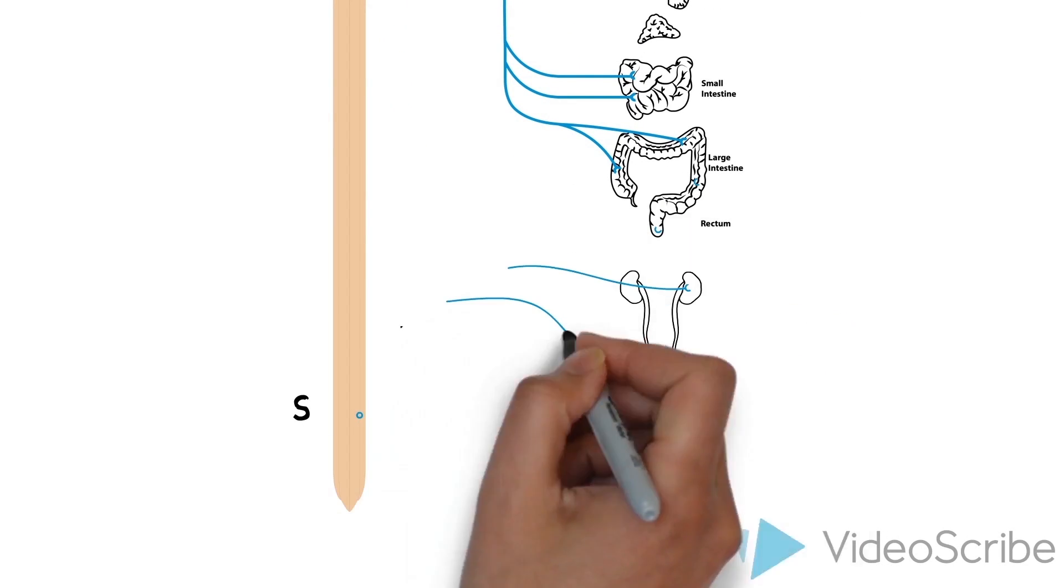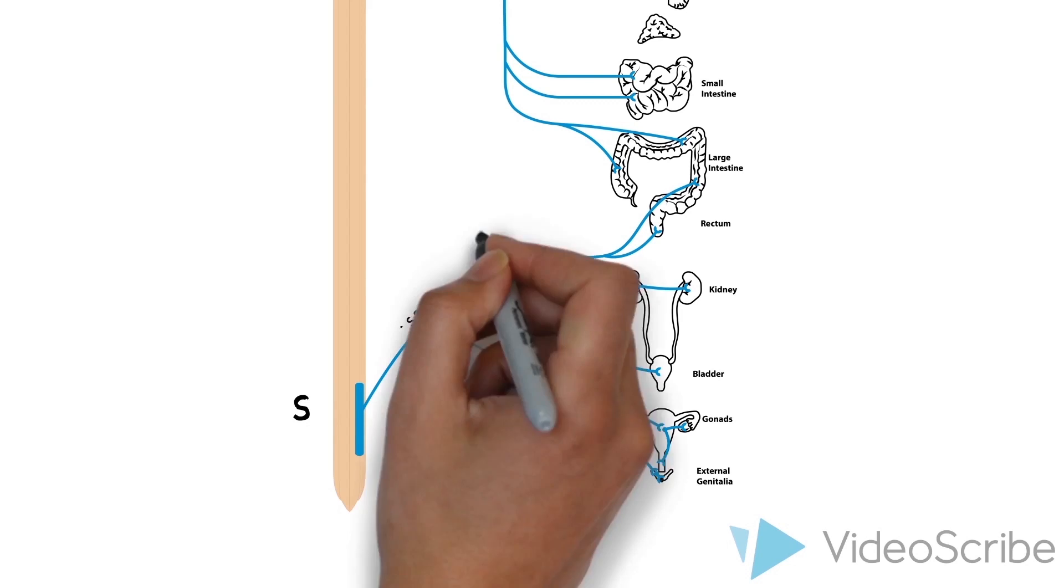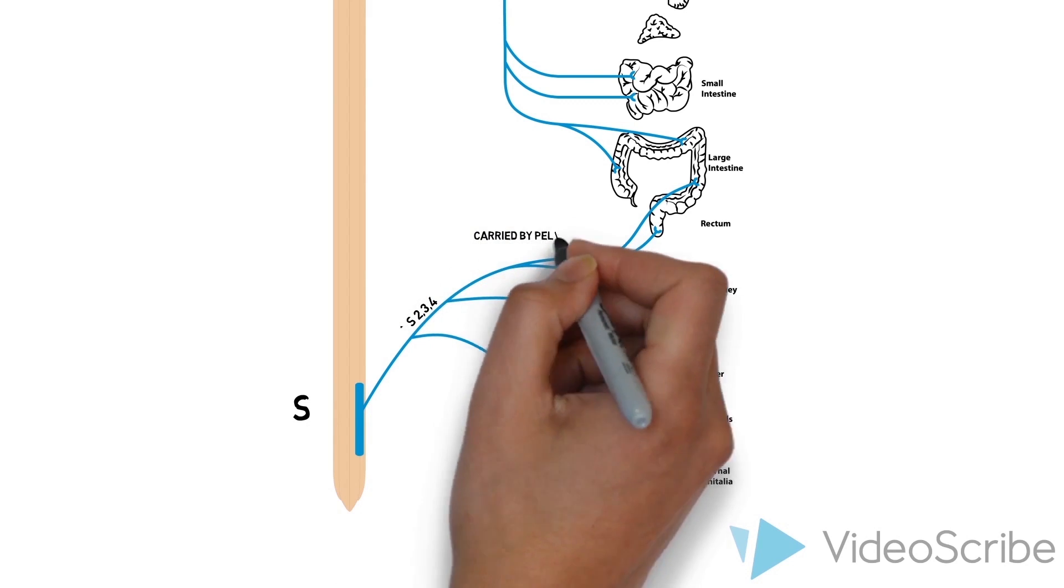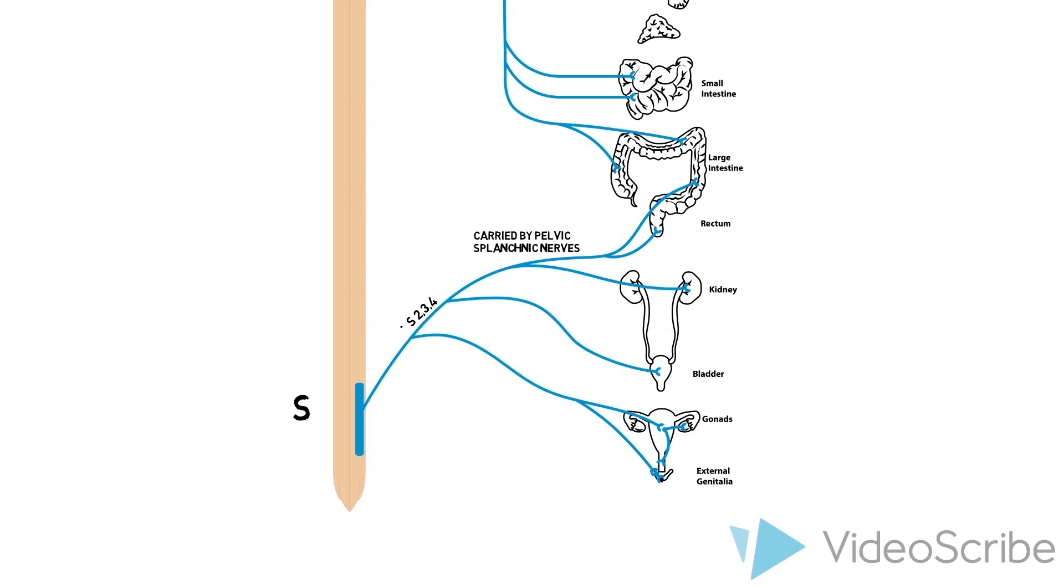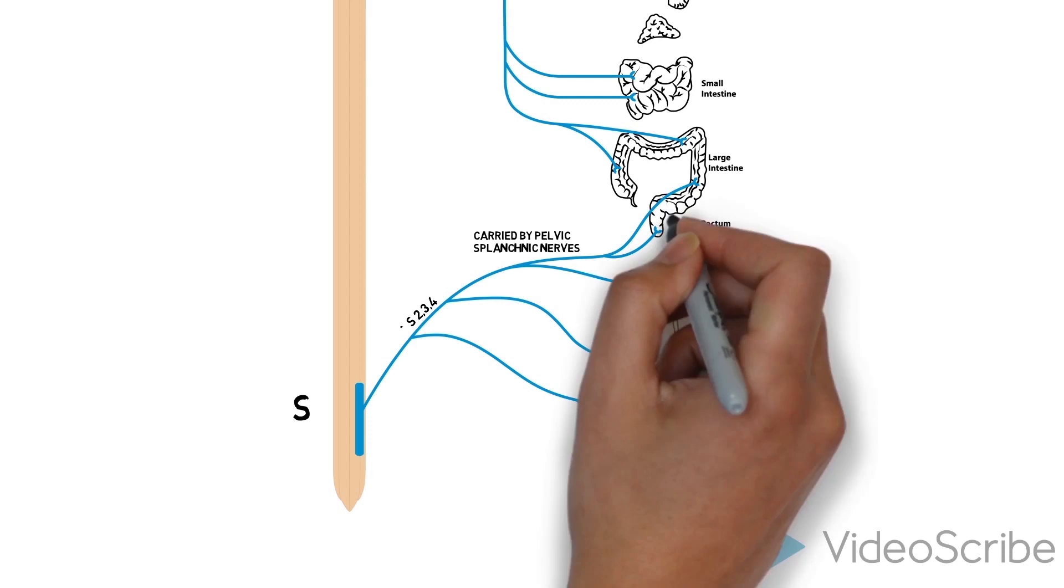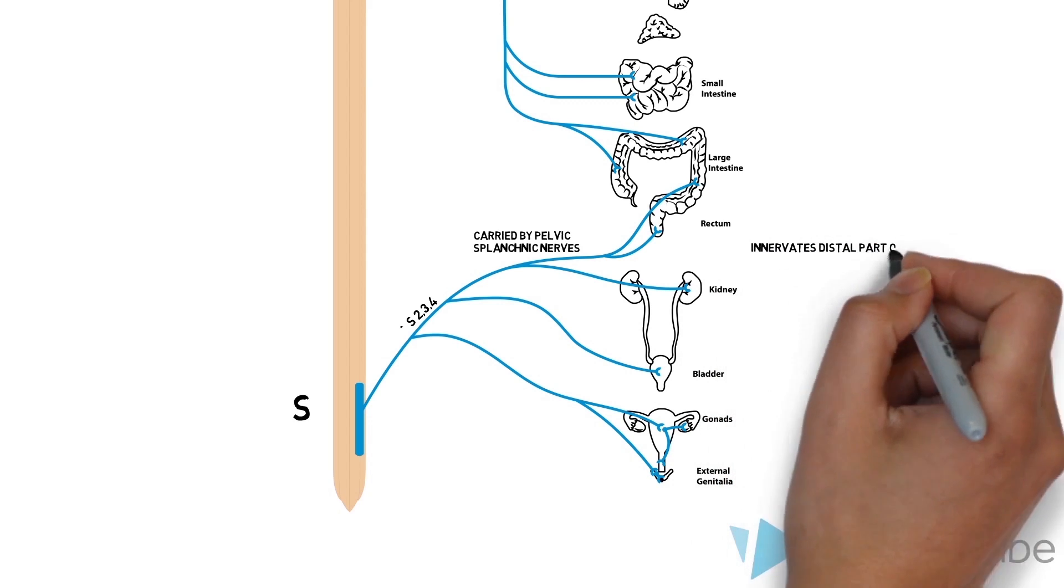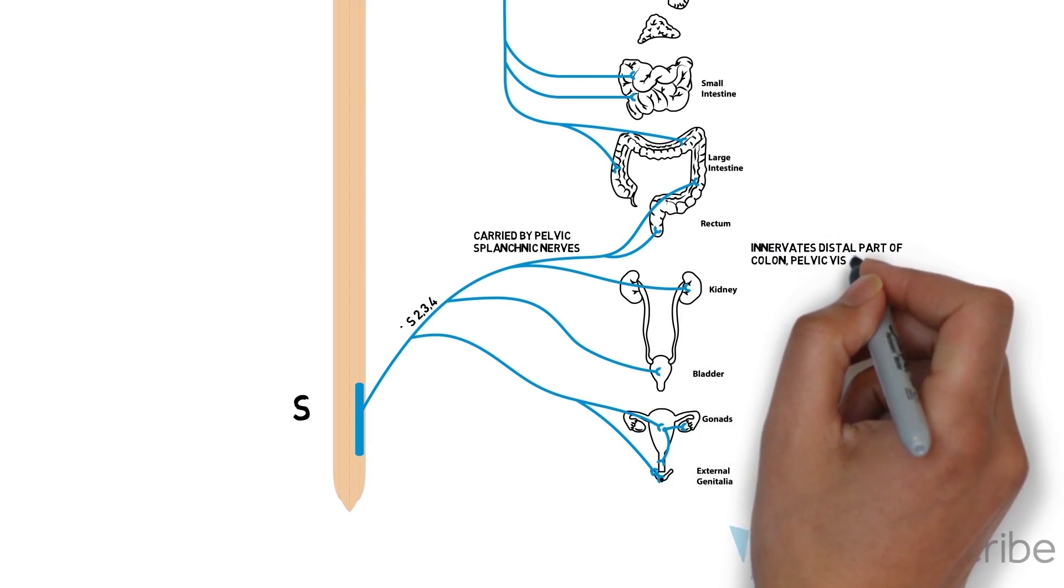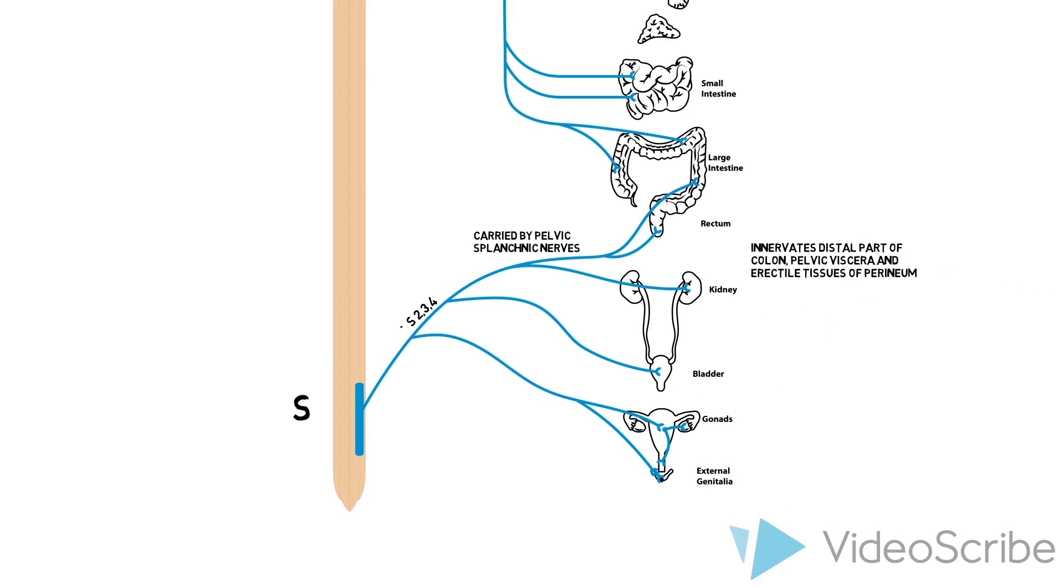Preganglionic visceral motor nerves carried out of the central nervous system in S2, 3, and 4 leave the ventral rami of these spinal nerves as pelvic splanchnic nerves that enter the lower part of the prevertebral plexus. These preganglionic fibers synapse with the enteric nervous system in the walls of the colon, distal to the region innervated by 10, and synapse with postganglionic neurons in ganglia associated with the walls of pelvic and perineal viscera.